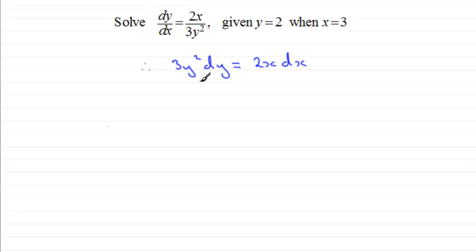So what we would have is 3y squared dy equals 2x dx. And then we have to integrate both sides. So we'll just put that like so. Now, when we come to integrating this side, we're going to get y cubed.